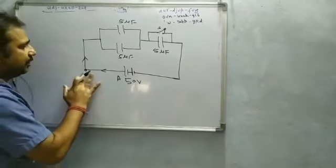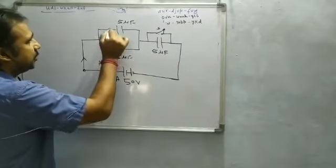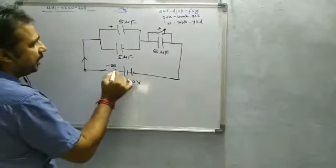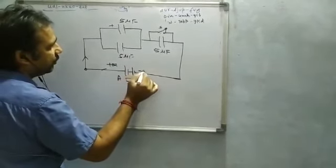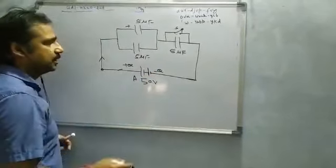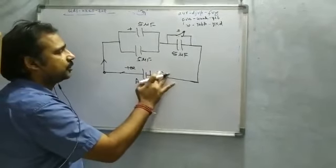When we are connecting any battery with capacitors, positive charge is coming to this point, and equal amount of charge will go from A to B. So positive charge will come from the battery and same amount of charge will go from...